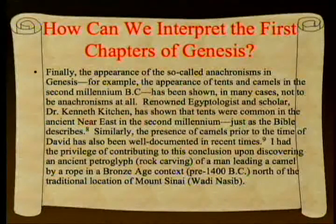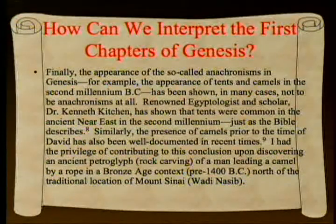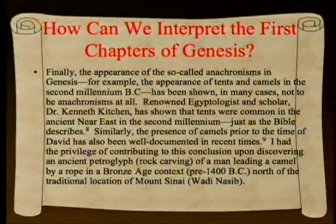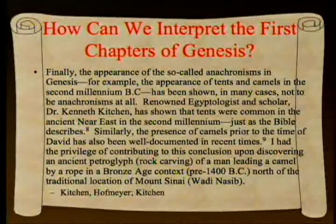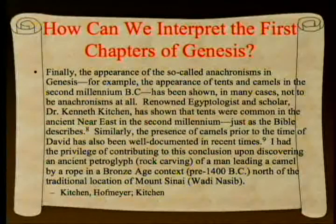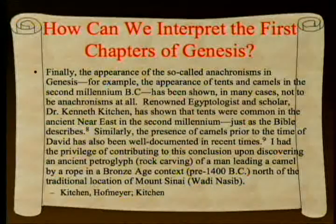Finally, the appearance of so-called anachronisms in Genesis—such as the appearance of tents and camels in the second millennium B.C.—has been shown in many cases not to be anachronisms at all. Renowned Egyptologist Dr. Kenneth Kitchen has shown that tents were common in the ancient Near East in the second millennium, just as the Bible describes, with additional references to Hoffmeyer. The presence of camels prior to the time of David has also been well documented in recent times.